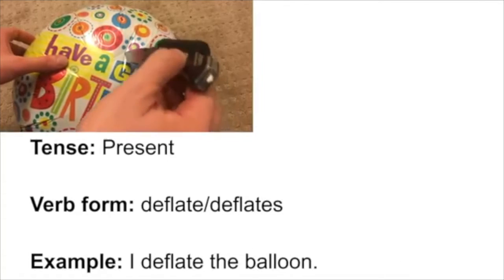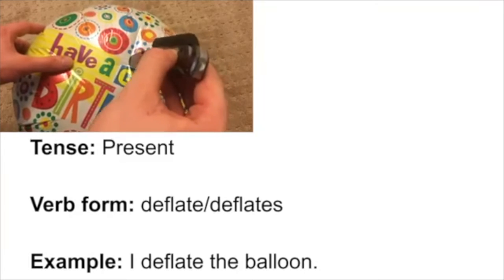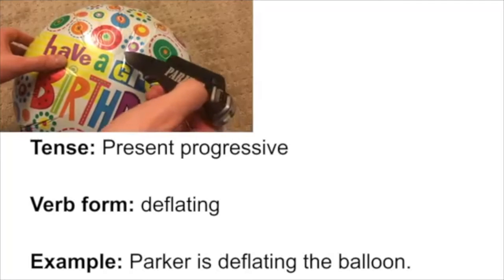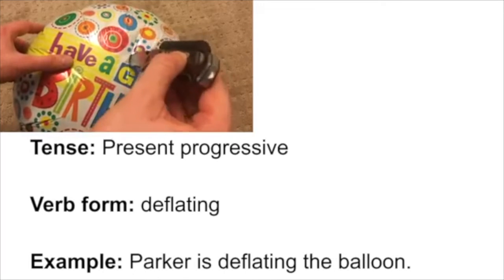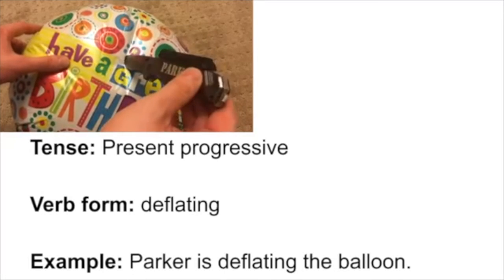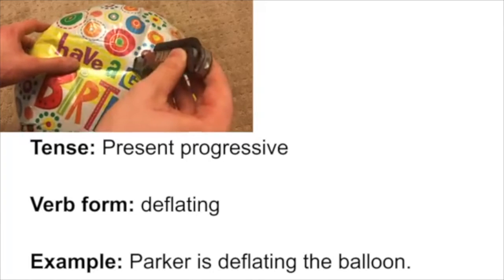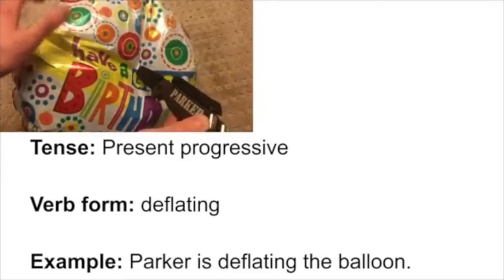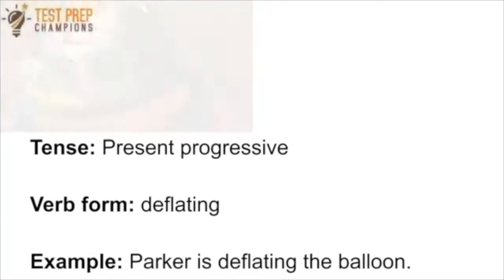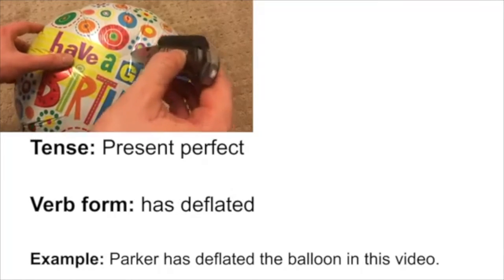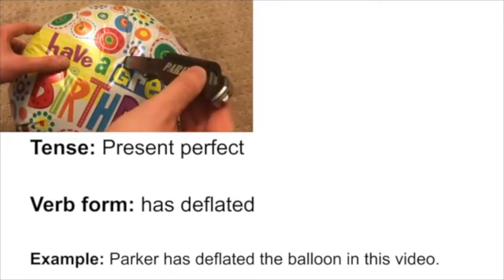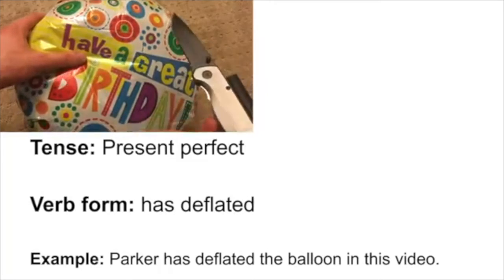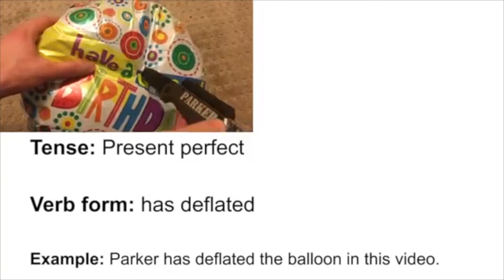For the present tense, we say 'deflate' or 'deflates' — for example, 'Parker deflates the balloon' or 'I deflate the balloon.' The present progressive tense is used to show an action in progress: we add 'ing' and put 'is' in front, giving us 'is deflating' — for example, 'Parker is deflating the balloon right now.' There's also the present perfect tense, used for an action that started in the past and continues in the present — for example, 'Parker has deflated the balloon during this video.'